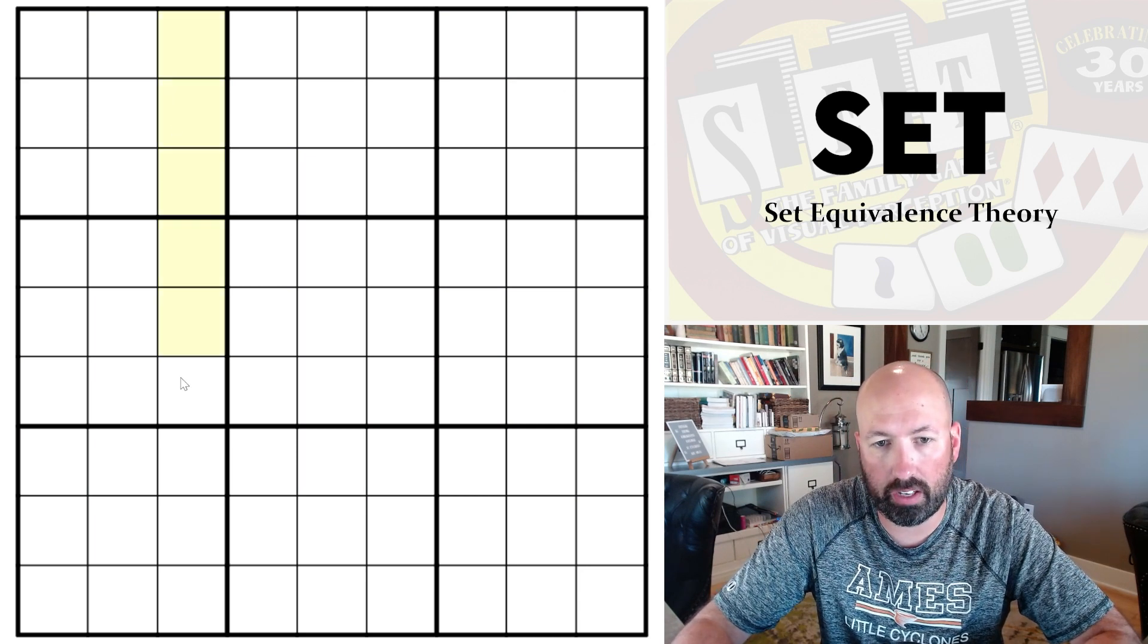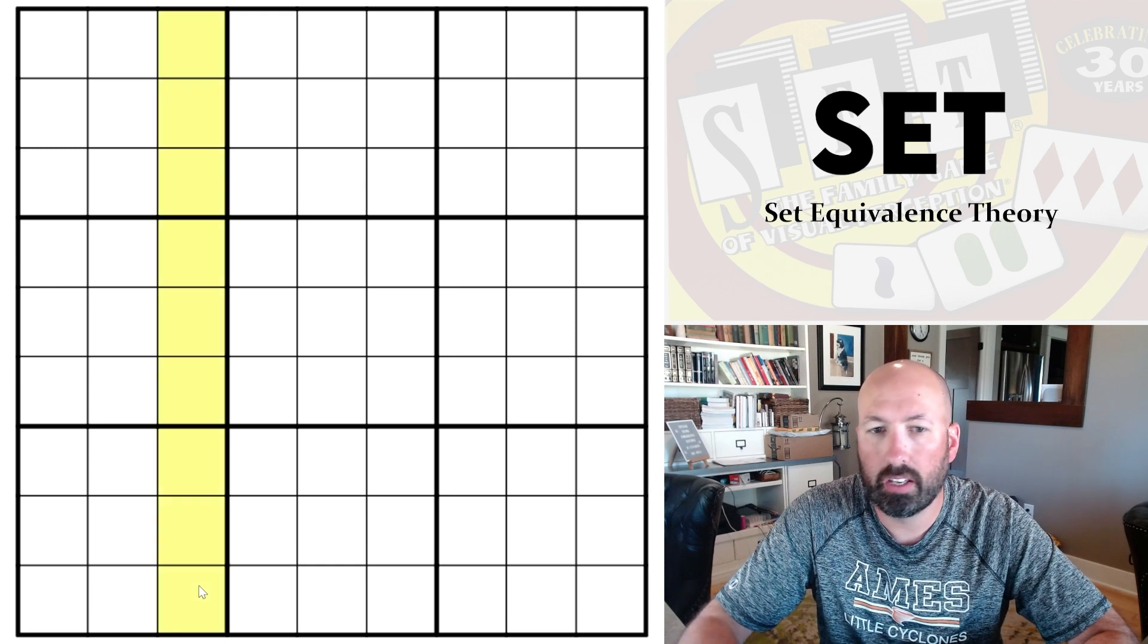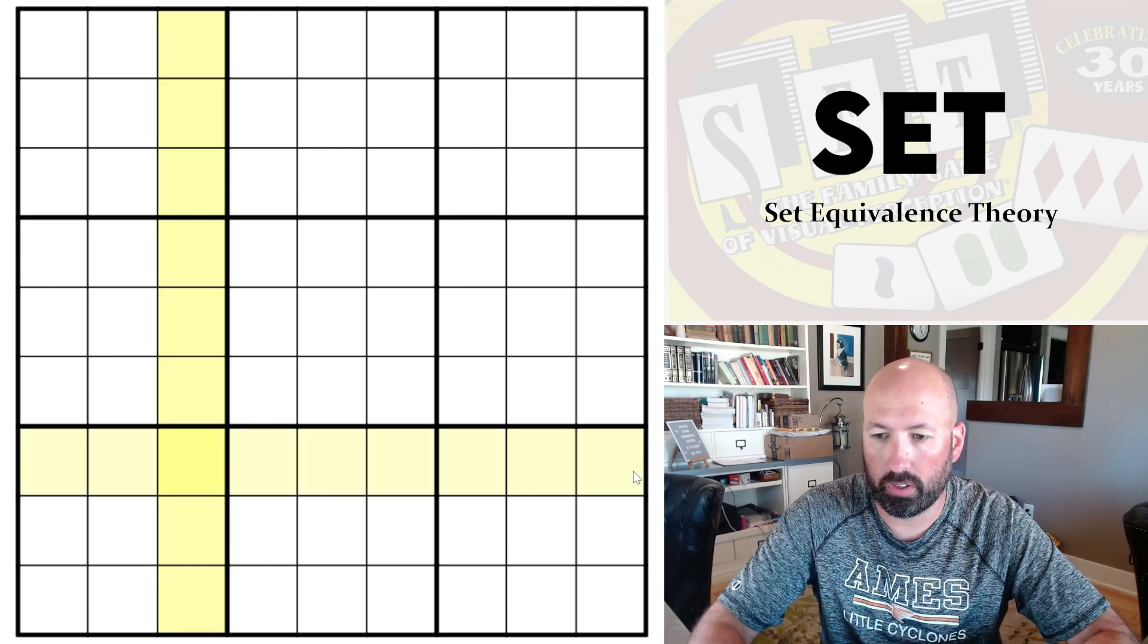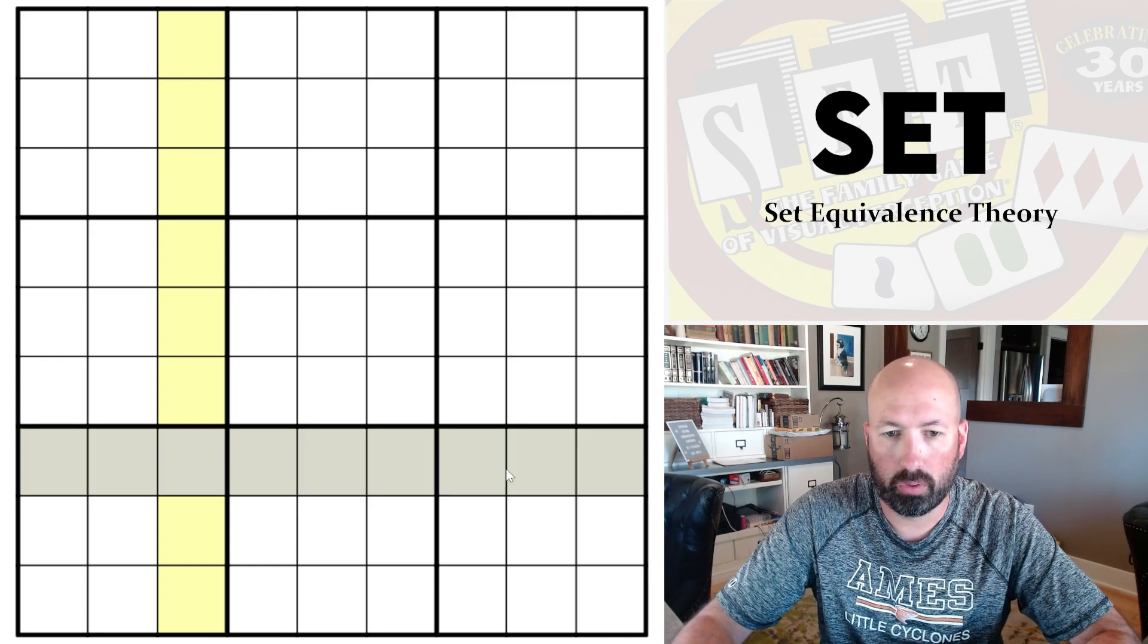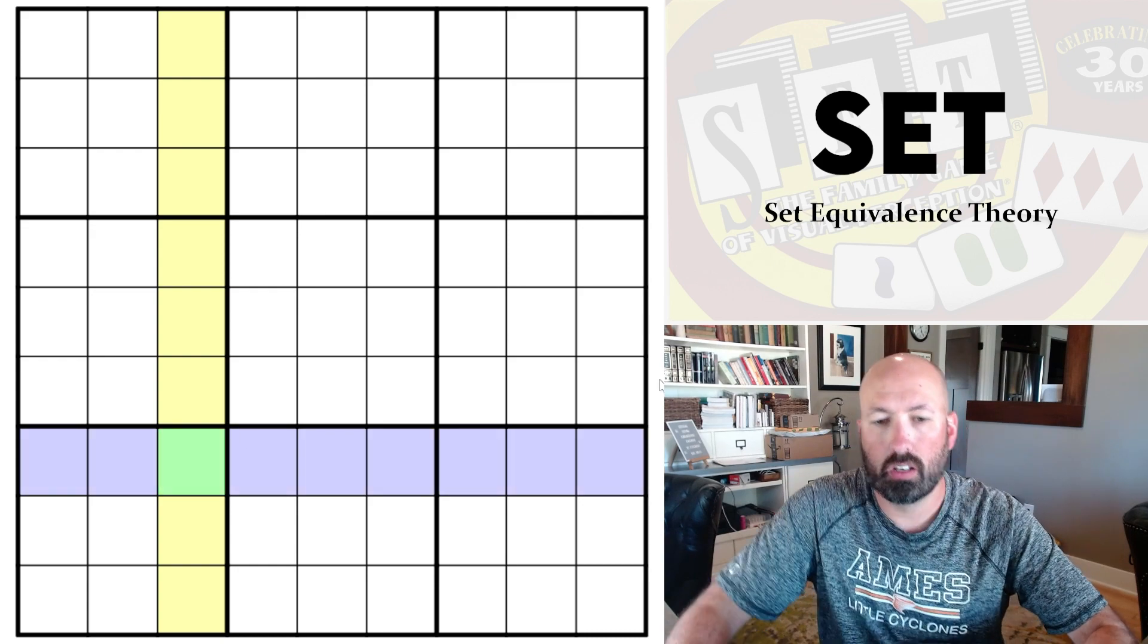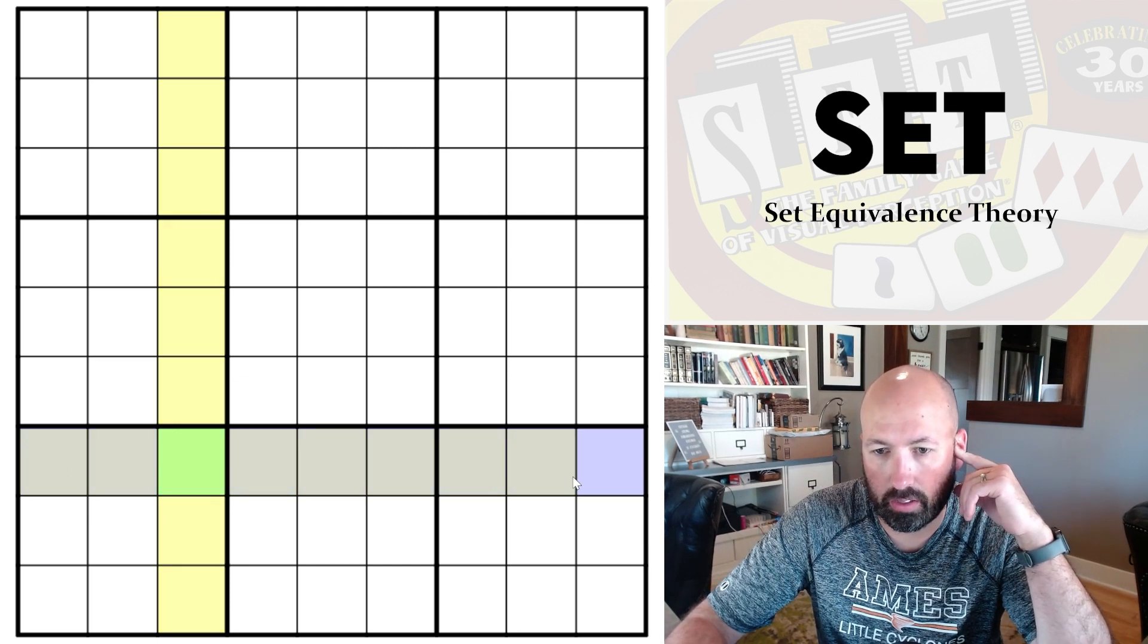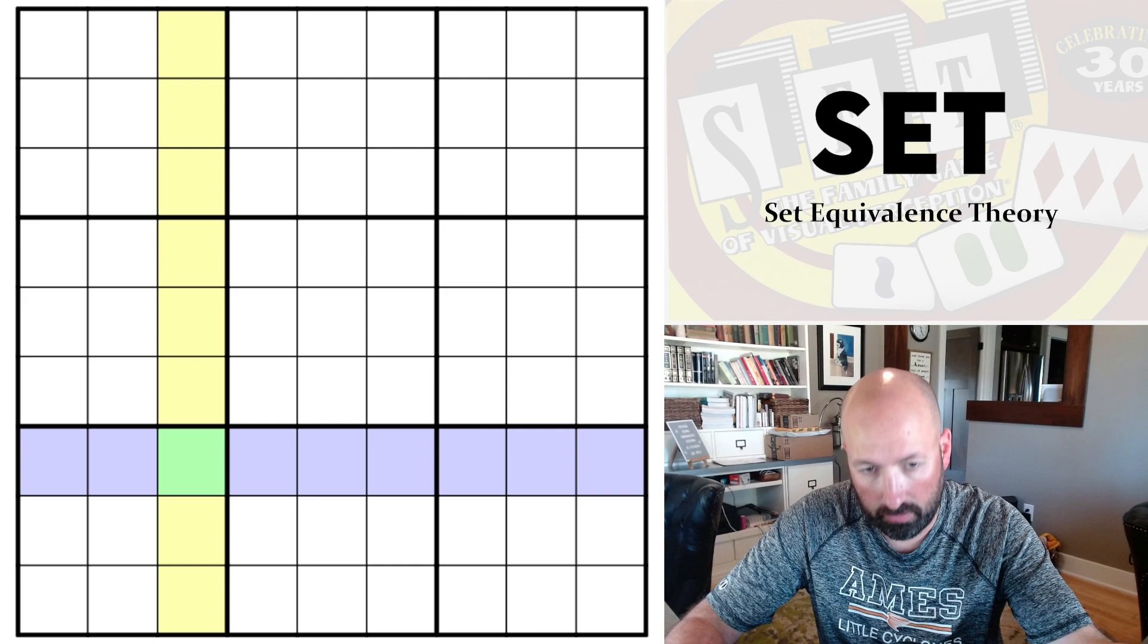Now we can do the same thing. We can say a column, let's mark it yellow, is the same as a row, for example. Let's make it blue. Now where they cross, I'm going to make that green. So we know that this column is going to have the digits one through nine. This row is going to have the digits one through nine, obviously.